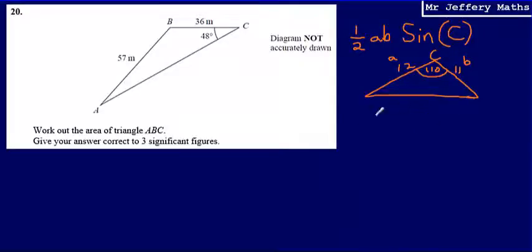Now if I have a little look at my question here, what I can see is that I don't have this situation. I've got two lengths, but they're not trapping an angle that I know. Or I could think about it that I've got a length and an angle, but I don't have this other length AC. So if I knew this angle or I knew that length, then I could use this formula half AB sine C. So what I'm going to need to do is I'm either going to have to work out what the length of AC is, or I'm going to have to work out what the angle ABC is.